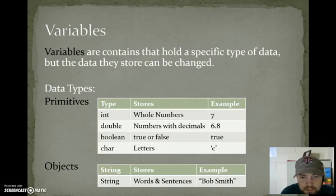The first primitive we're covering is int, which stores whole numbers. An example would be 7. Double, which stores numbers with decimal places. 6.8 is a number with a decimal place. 4 is also a number with a decimal place. You may not see them, but it would be .0000. So you can store whole numbers into doubles.